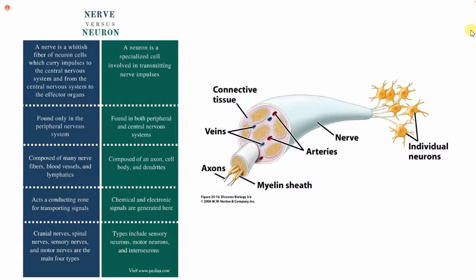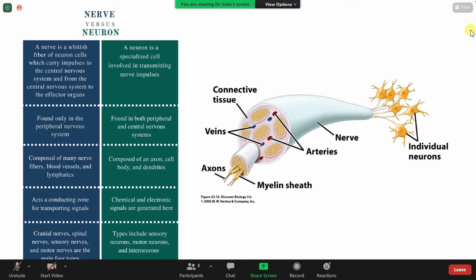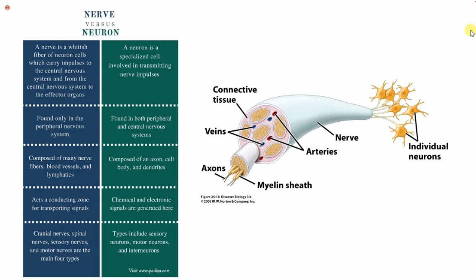Let's recap our last lesson. We are covering the nervous system of the human body. We are differentiating between the nerve fiber and the neuronal cell — how the nerve fiber is differentiated from the neuronal cell. The nerve fiber is a collective term, connected with its wings, arteries, and the neuronal cells.